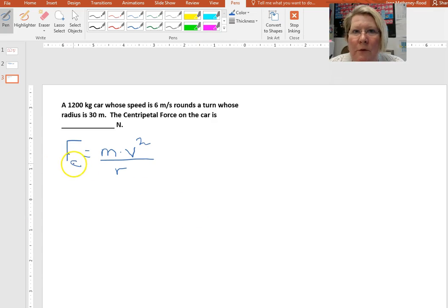So the formula for centripetal force is the mass times the velocity squared divided by the radius (Fc = mv²/r). This is a force, so we're in newtons because it is a force.